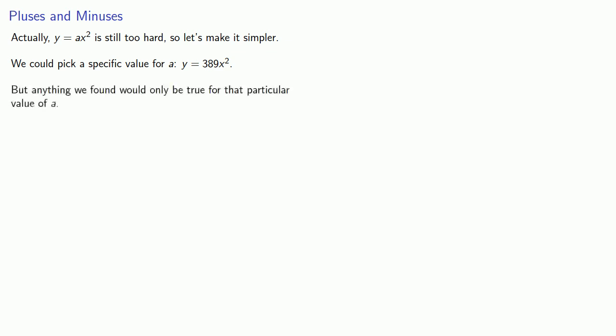The problem is that anything we found would only be true for that particular value of a. So we might learn a lot about the graph of y equals 389x squared, but it would tell us nothing about the graph of y equals 388x squared. So this is maybe a little too simple.